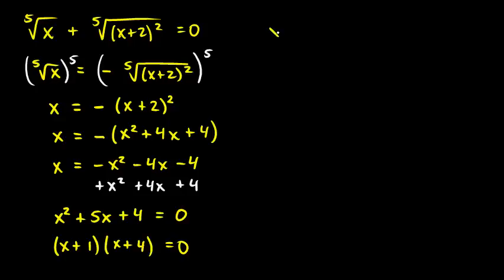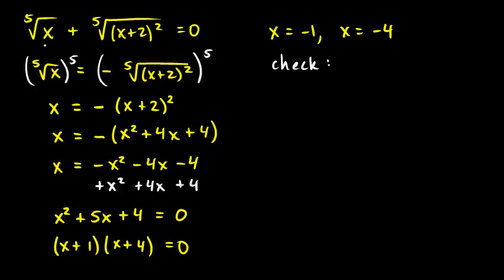So you can see the two solutions: x equals negative 1 and x equals negative 4. Those are the two solutions. Now we can check those — if they are in fact solutions, we should be able to plug them in for x and have them work.